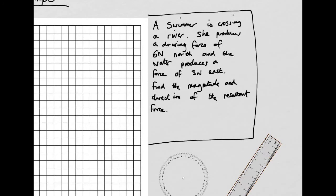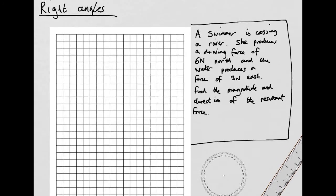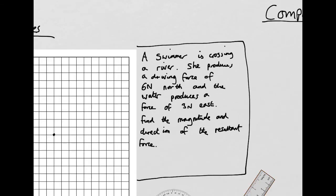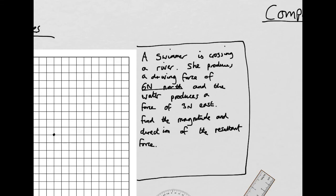Let's have a look at a question, and I'm going to try and draw this to scale as well. A swimmer is crossing a river. If she's producing a driving force of six newtons north and the water produces a force of three newtons east, find the magnitude and direction of the resultant force. Firstly, I'm going to draw the free body diagram for this situation to scale.